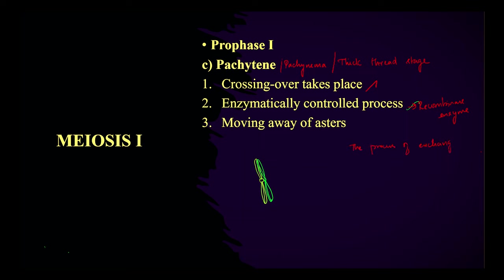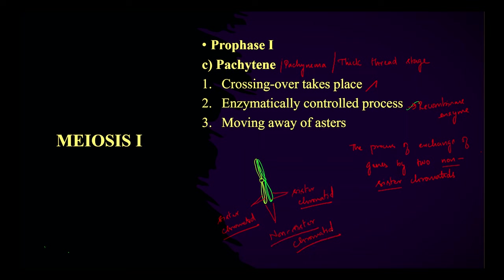The process of exchange of genes by two non-sister chromatids is called crossing over. Non-sister chromatids are chromatids from two different chromosomes — one chromatid from one chromosome and one from another chromosome get combined for crossing over.